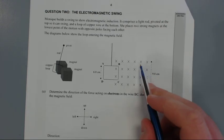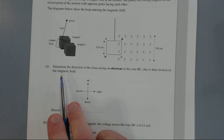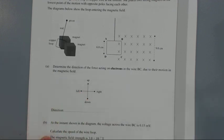Just first off, these crosses mean you're digging for treasure, which means the magnetic field goes into the page. Part A: Determine the direction of the force acting on the electrons in the wire BC due to their motion in the magnetic field. So there are a few ways to go about this.